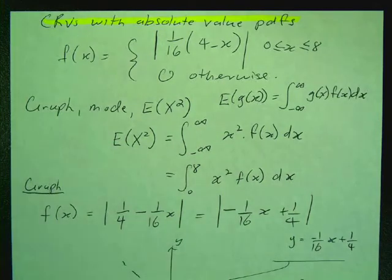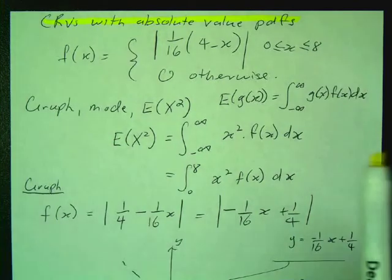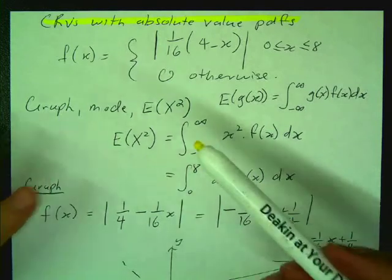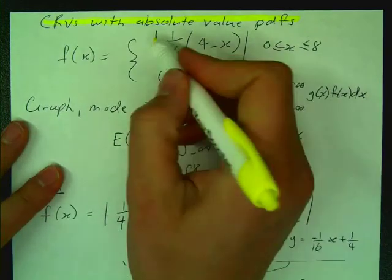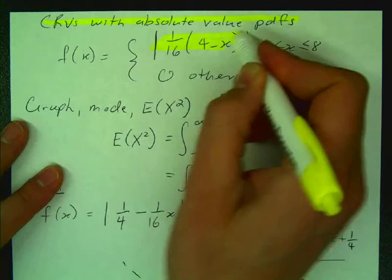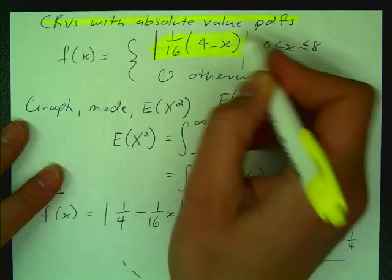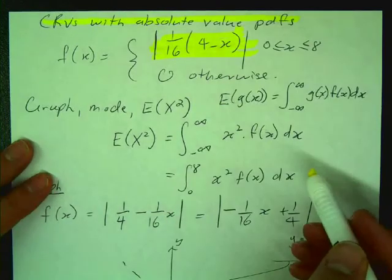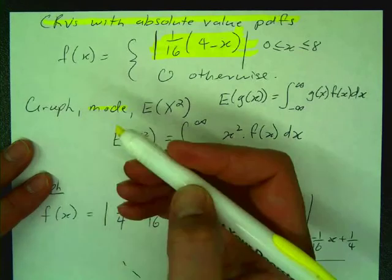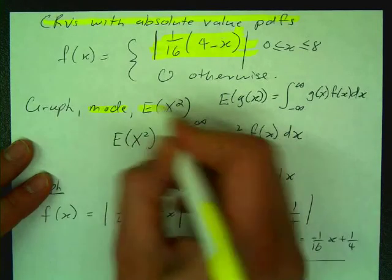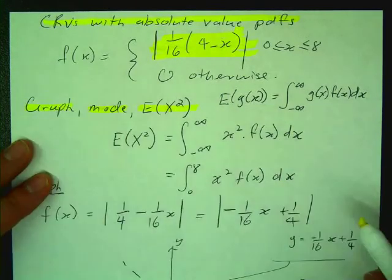Alright, so on this problem we were given the probability density function to be this absolute value function here. And I wanted you to find the mode, E of x squared, and I also wanted you to graph what it looked like.